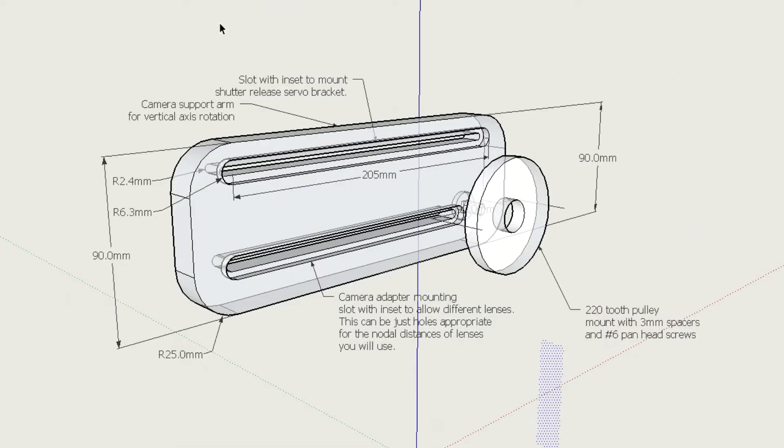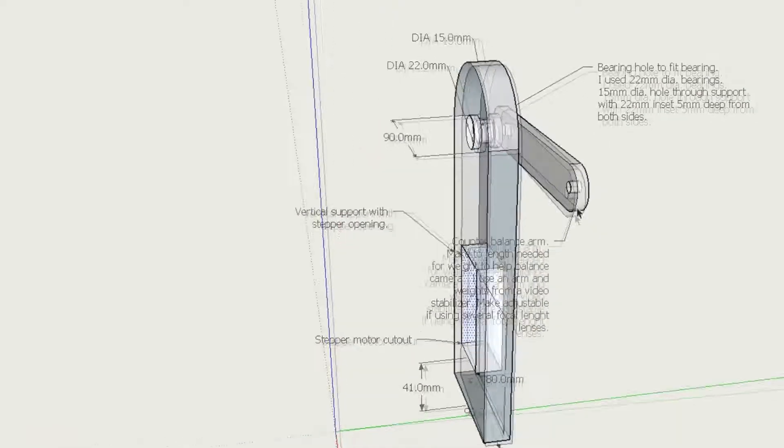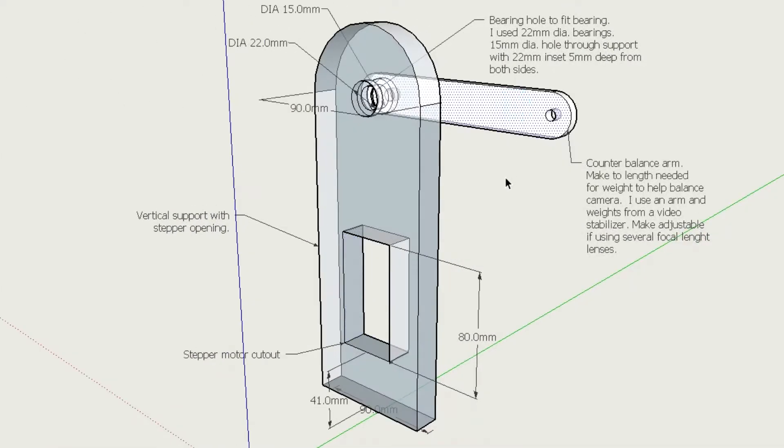The shaft to which the vertical arm is attached also connects to a counterbalance arm to balance the weight of the camera, allowing much smaller stepper motors and lower power requirements.